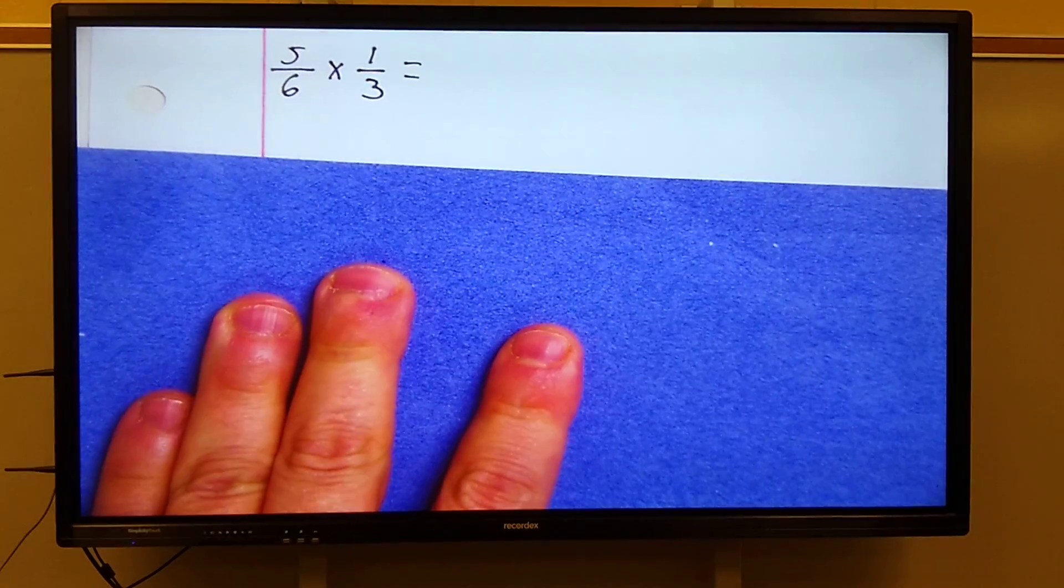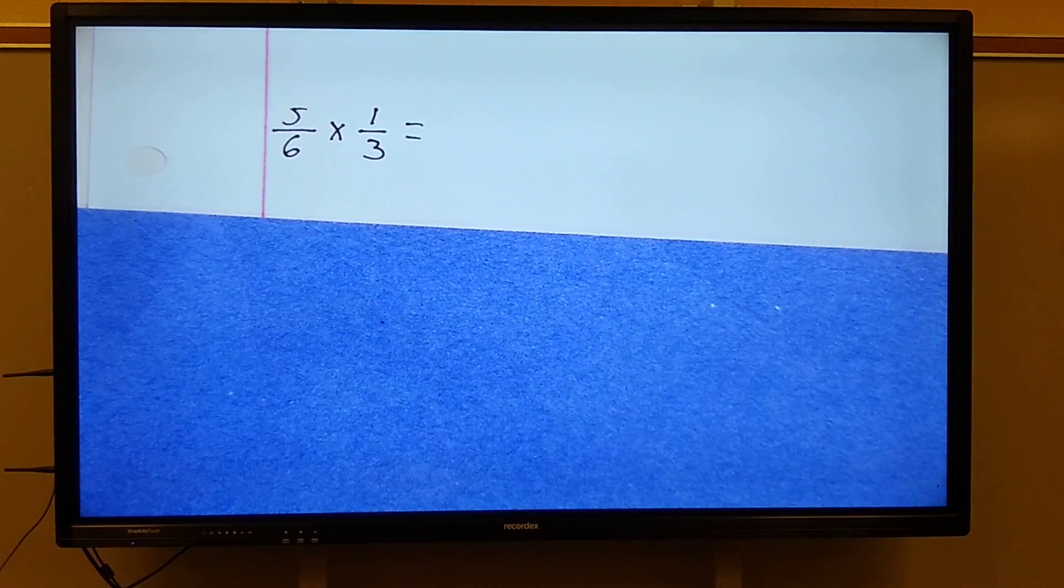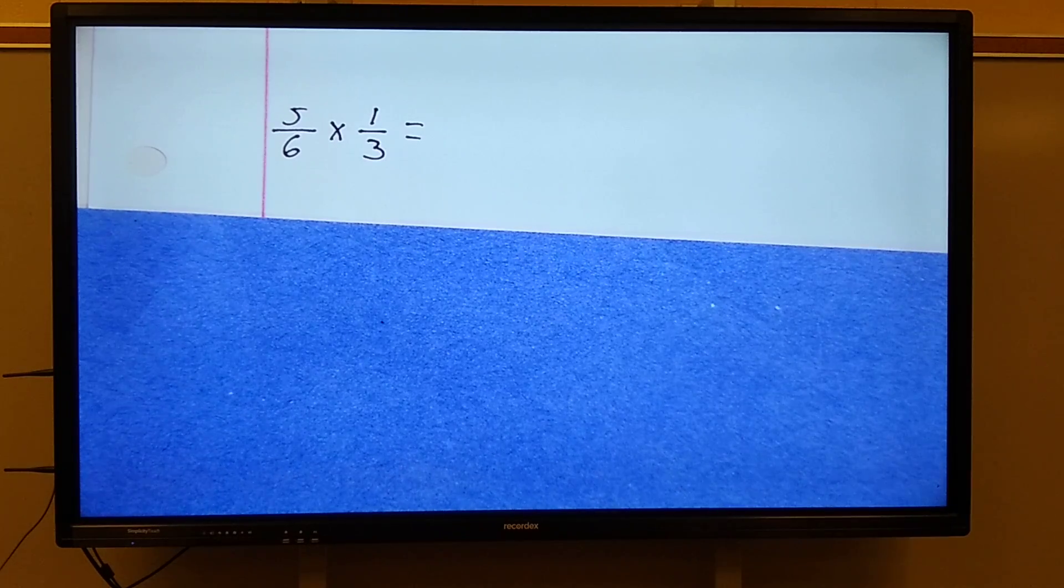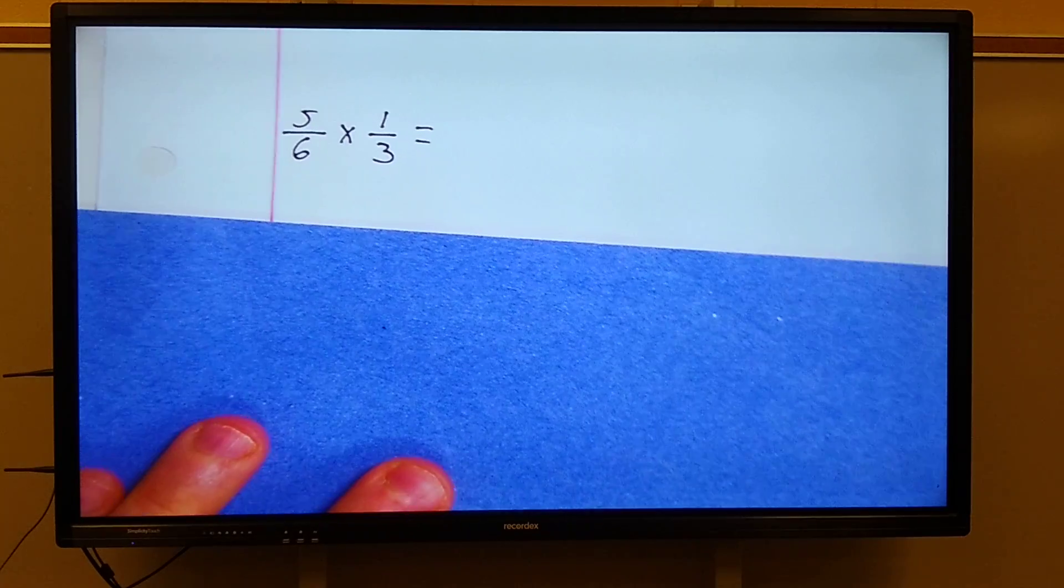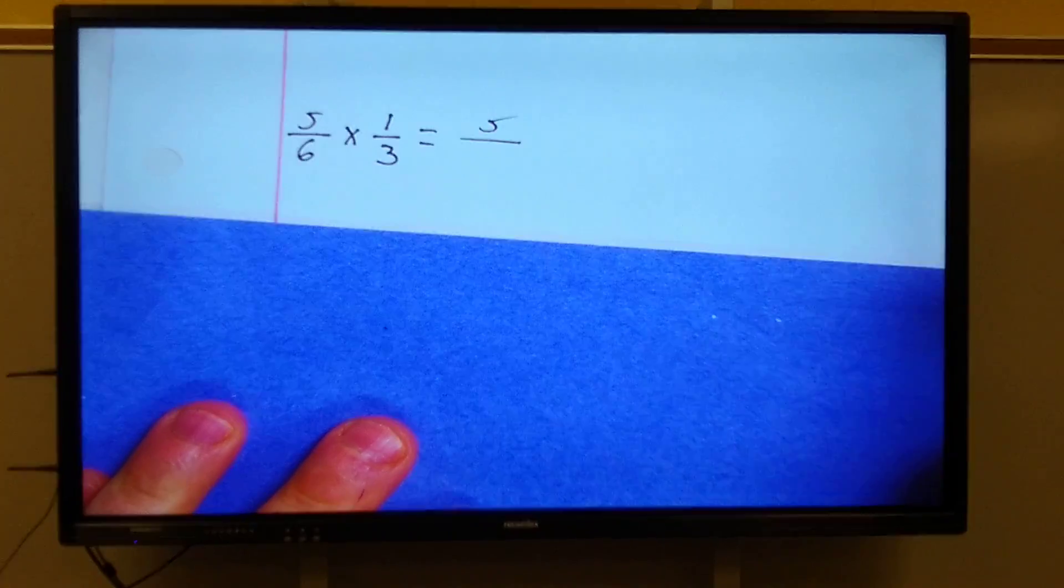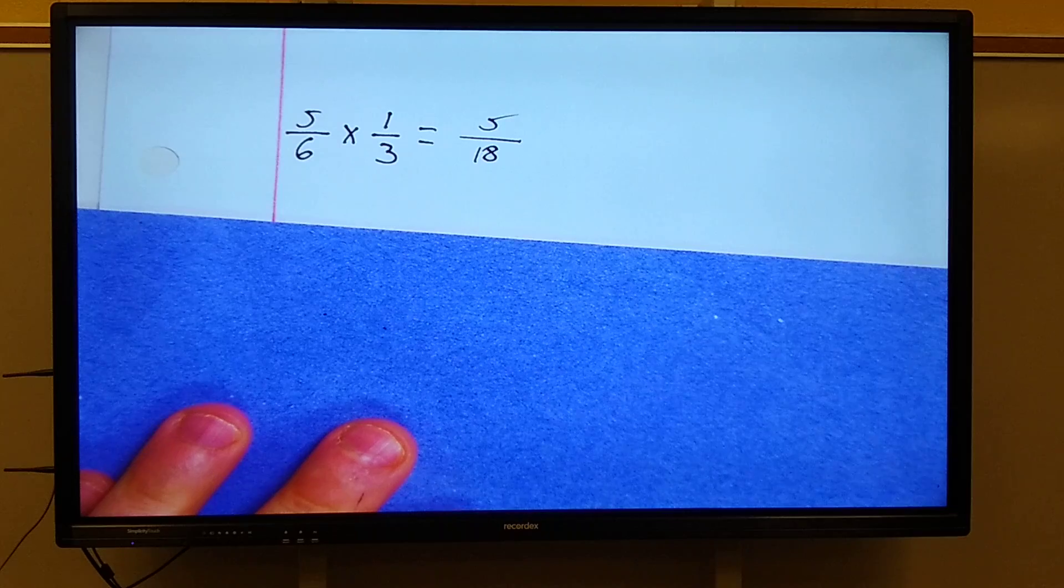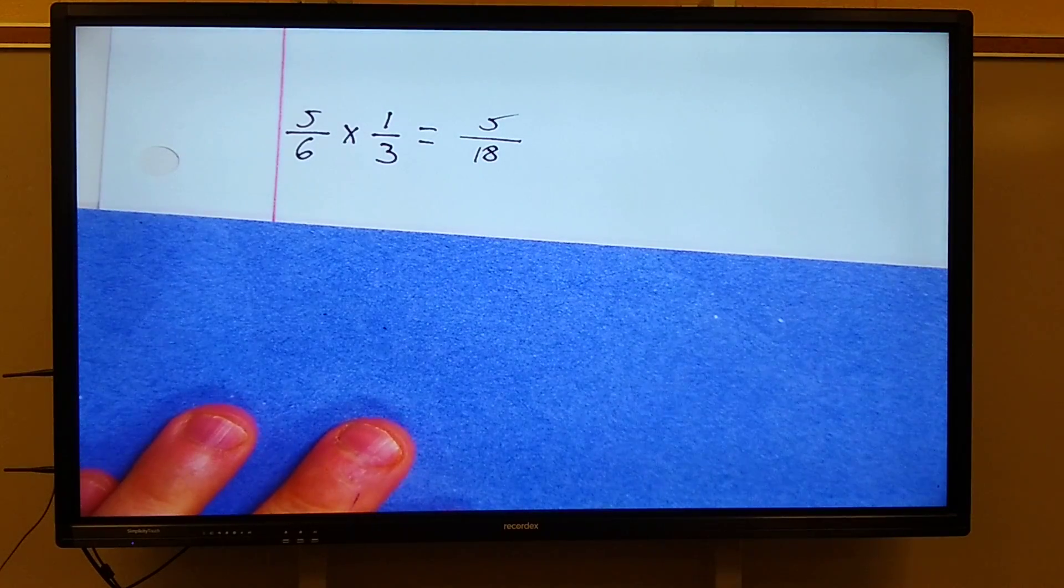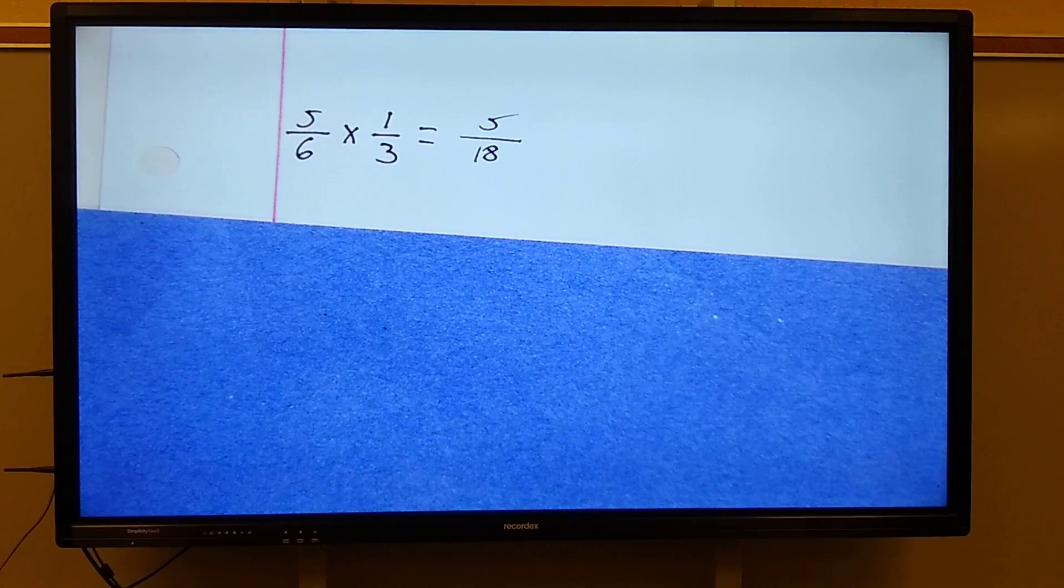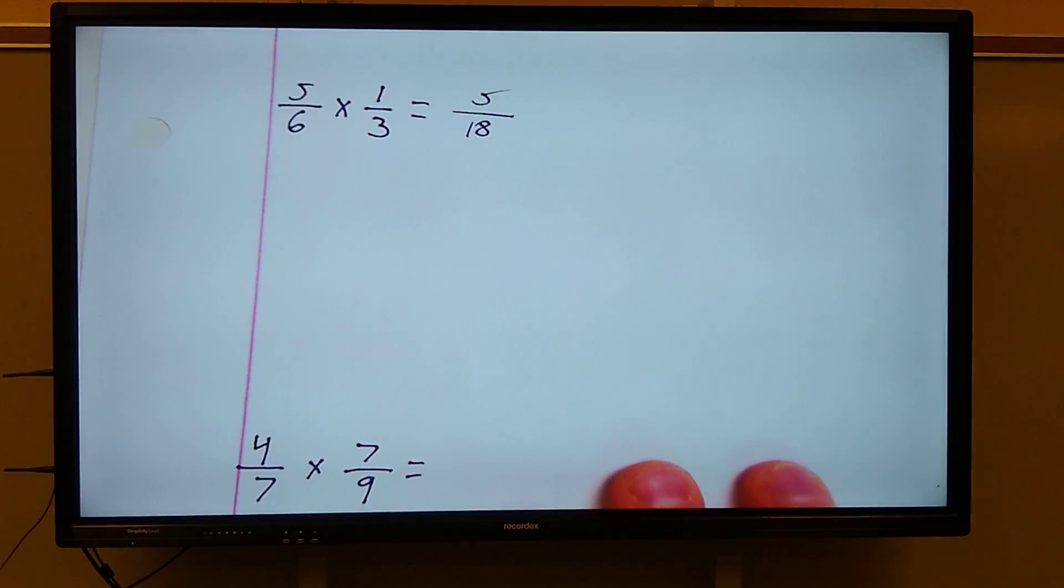The next one: 5/6 times 1/3. Pause video, solve that problem, do it right. Alright, let's see how wonderful you did. 5 times 1 is 5. 6 times 3 is 18. Is this an improper fraction? No. Is this in simplest form? Yes. So that's the answer.